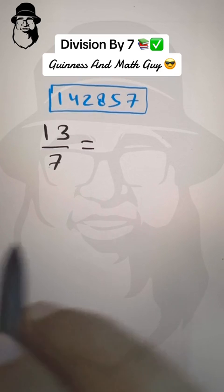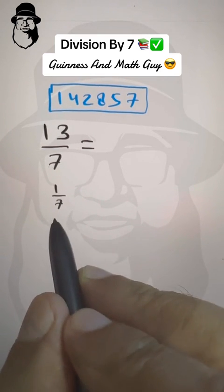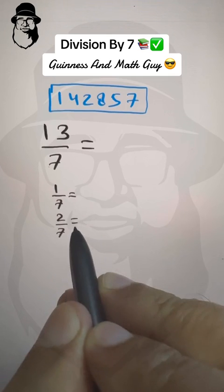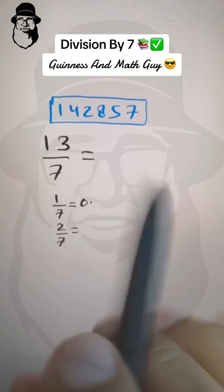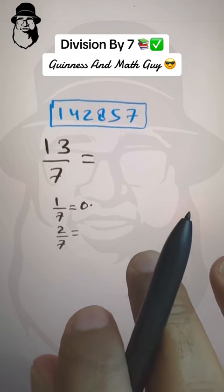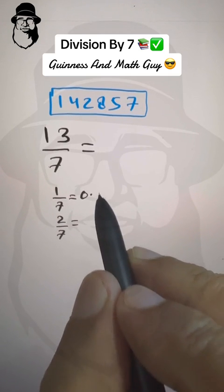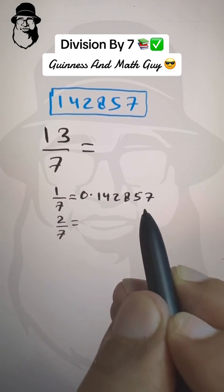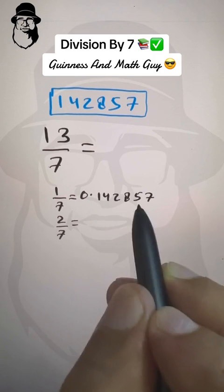So what I am going to tell you now is 1 over 7, 2 over 7. 1 over 7 is 0 point something, and that point something is this same number. This same number, 0 point 1, 4, 2, 8, 5, 7. Again, from here, this same number repeats.